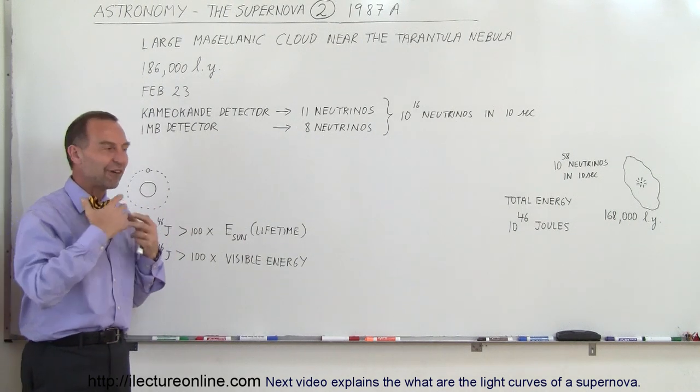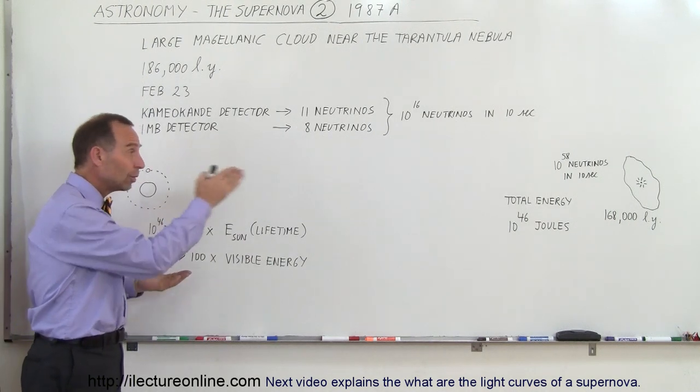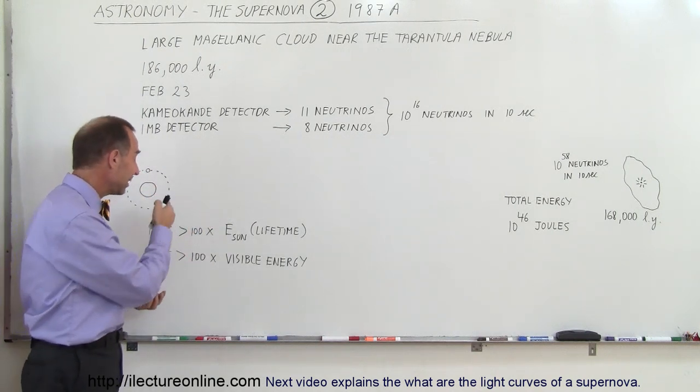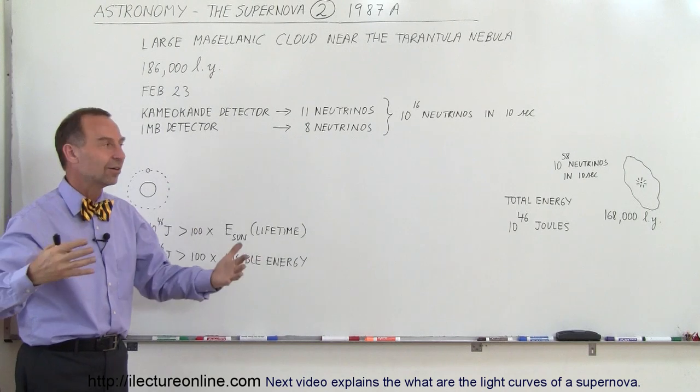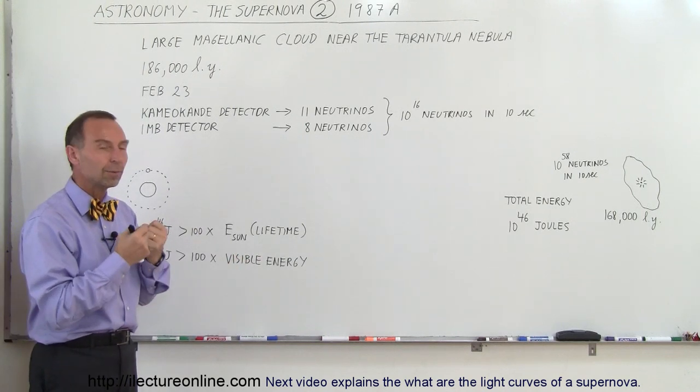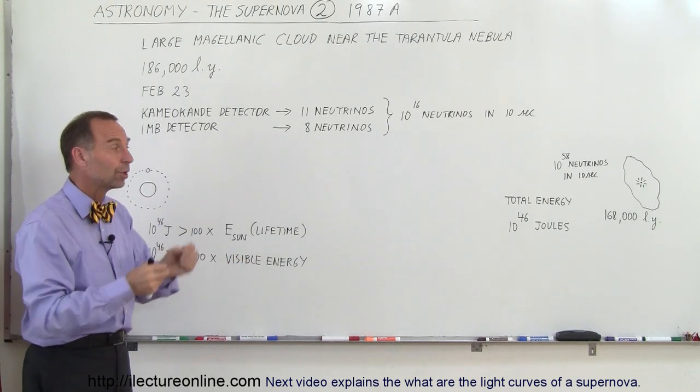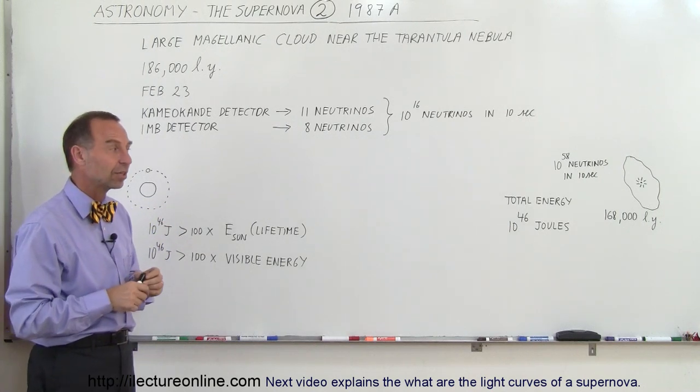Can you imagine? The Sun shining for 5 billion years, and the energy released in that 10-second burst was at least 100 times as much as the energy released by the Sun in its entire lifetime. That is an incredible amount of energy to simply burst forward in the form of neutrinos being ejected.